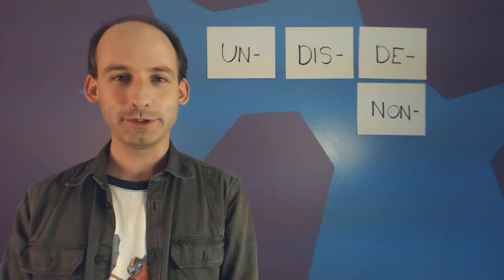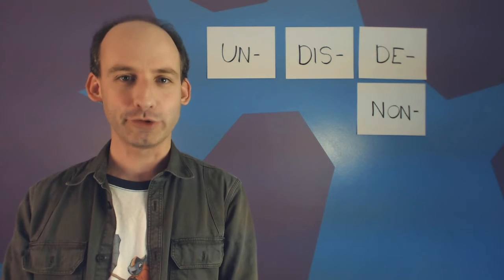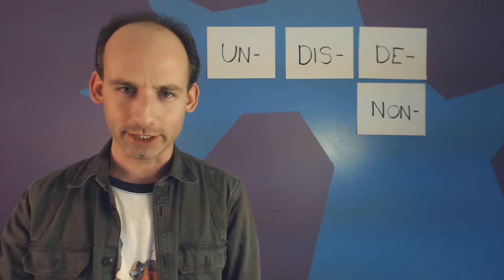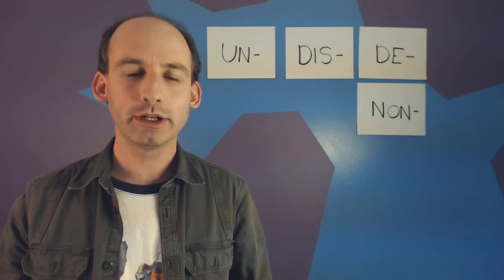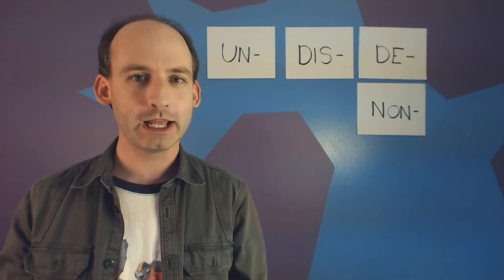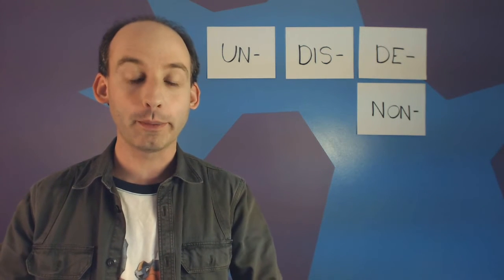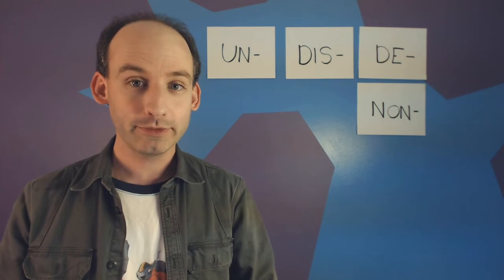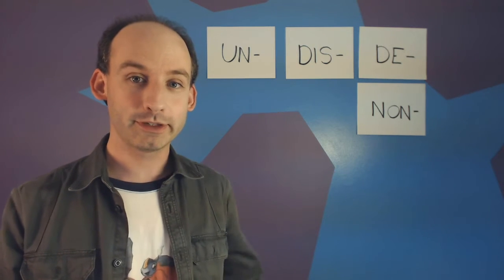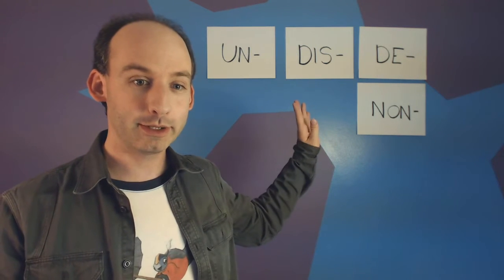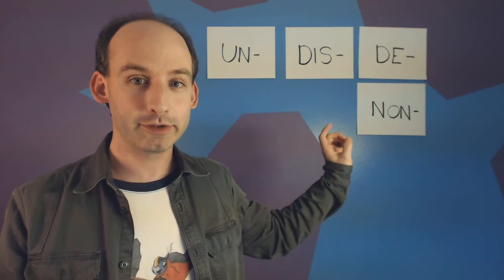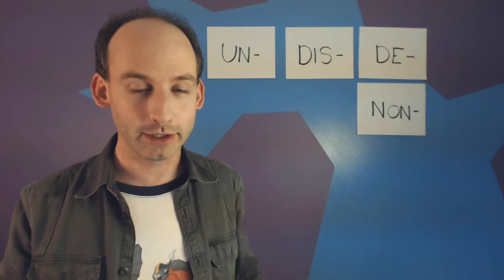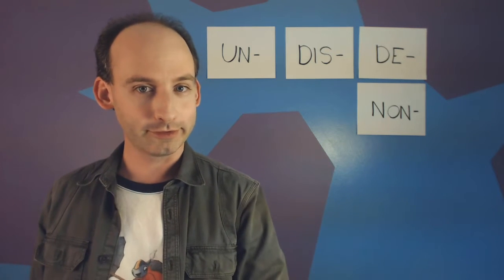Welcome to Learning English with NeverDot. I'm NeverDot. Today we're going to be learning about opposites and how to create an opposite word with a prefix. One of the four prefixes we're going to learn about is UN. The others are DIS, DE, and NON. Let's look at some examples.